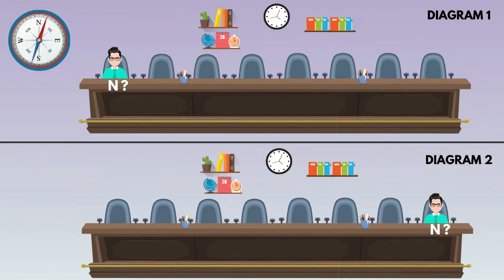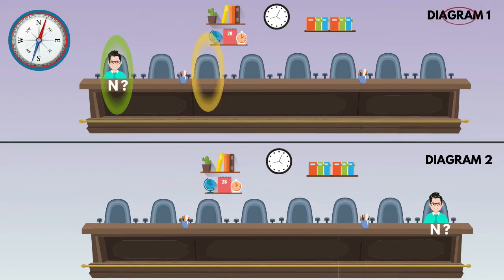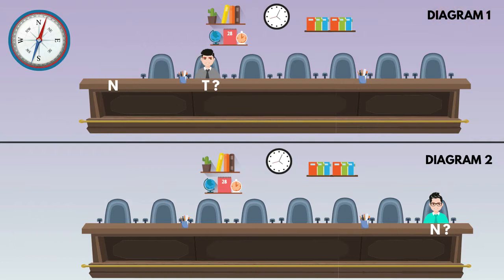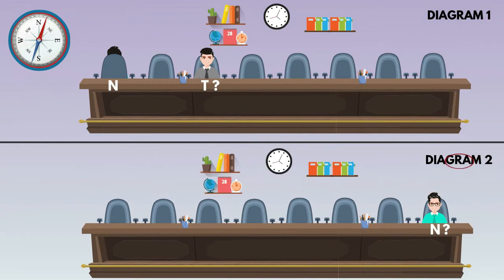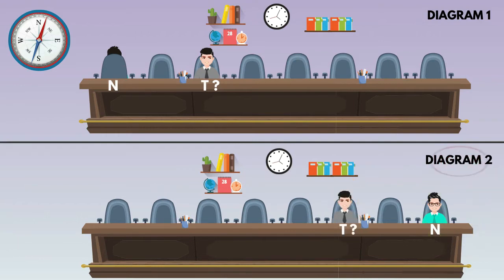Go to the next statement: T sits second to the right of N. In diagram 1, N sits at the left extreme. We can place T second to the right, and N faces north direction because T sits second to the right of N. In diagram 2, N sits at the right extreme, so T is placed accordingly, and N faces south direction because T sits second to the right of N.